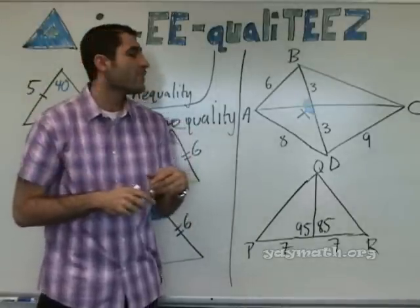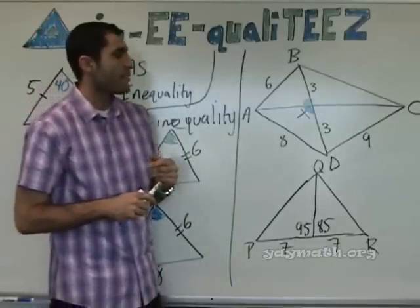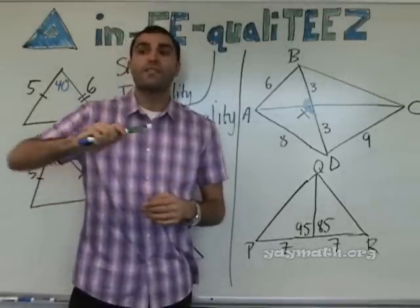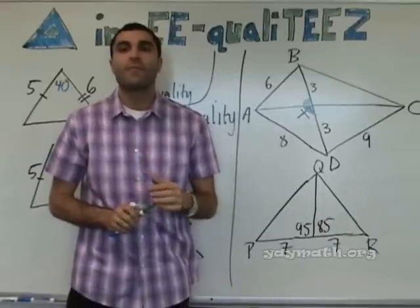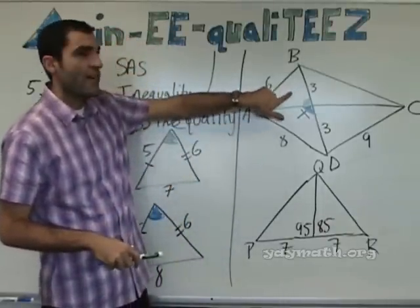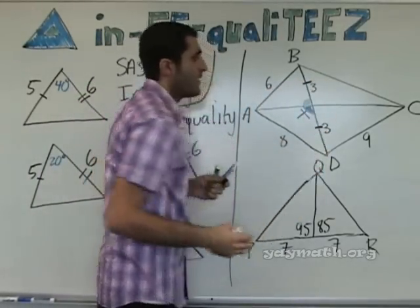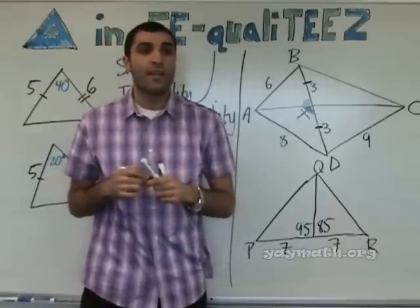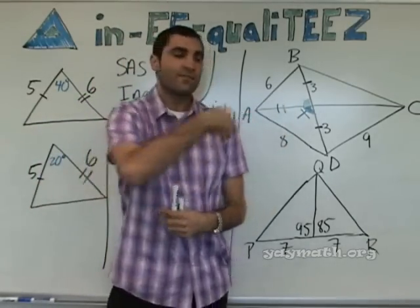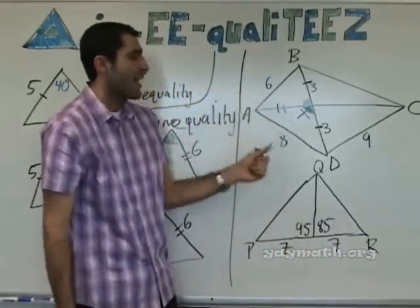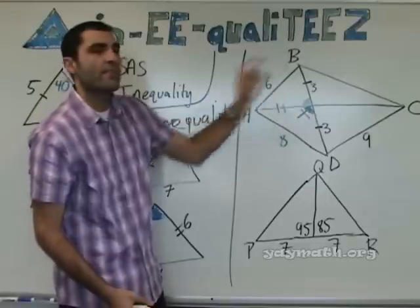The blue one is bigger. Why? Because according to SSS, if it has a larger side, it will be bigger. But first, let's establish — do these two triangles have two congruent sides? Is there one side of this triangle congruent to this? Yes — the three is congruent to the three. And they share a wall — that's the reflexive property. So they officially have two sides that are congruent. Now that they have two sides that are congruent, we can compare the third side by SSS Inequality. This side is bigger than this side, thus this angle is bigger than this angle.